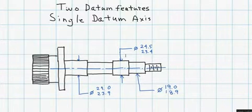So what we have here is a shaft feature and this shaft feature will rotate about a couple of bearing features in the mating part and those diameters are defined as 24.5 to 23.4.